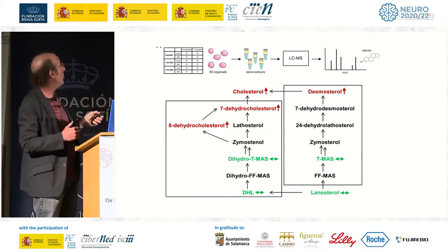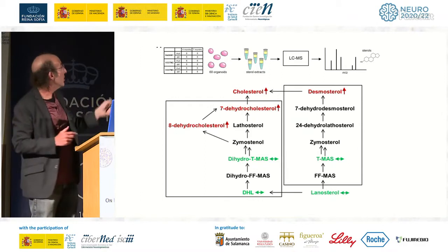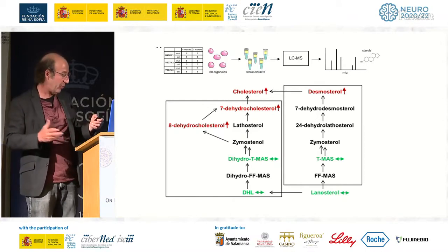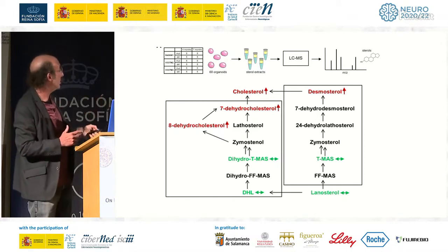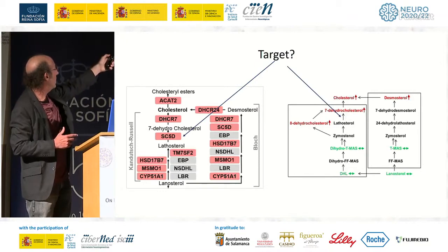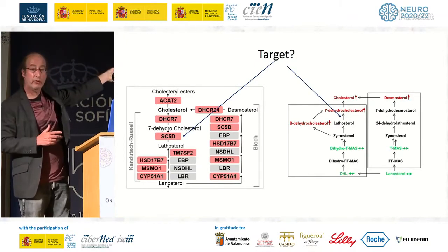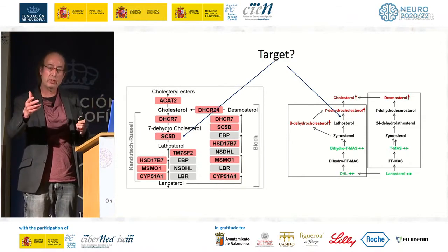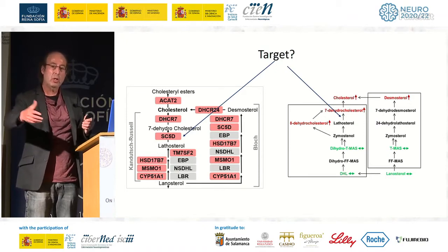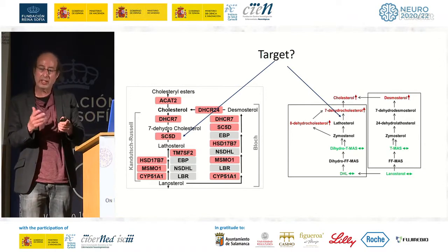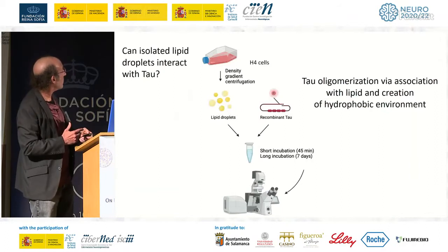Several intermediates of the pathway have all been upregulated. If you combine the two datasets, you can see that the gene encoding an enzyme in the cholesterol pathway and its product 7-dehydrocholesterol are both upregulated — so we have an increase in the transcript, probably showing an increase in the protein, leading to an increase in the product. That becomes very satisfying that we're on the right track.